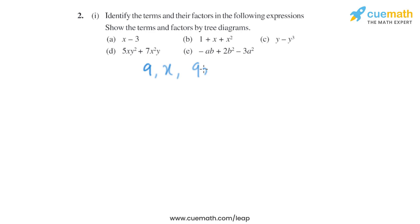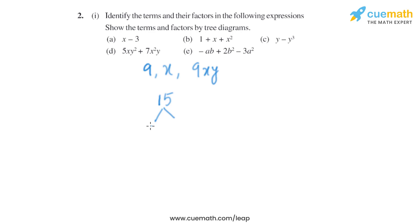For example, 9XY — these are terms. Factors are numbers or algebraic expressions that divide another number or expression evenly without leaving any remainder. For example, the factors of 15 are 3 and 5, as both 3 and 5 can divide 15 evenly without leaving any remainder.